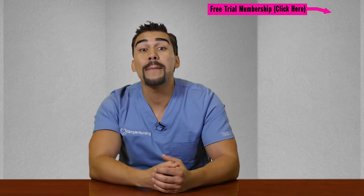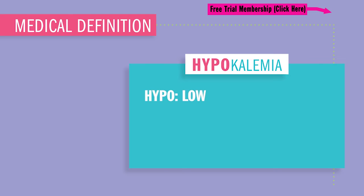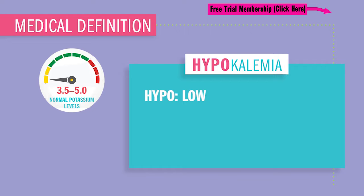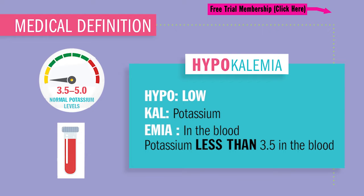Today we're wrapping up hypokalemia. Hypo meaning low, cal meaning potassium, emia in the blood — so potassium less than 3.5 in the blood.